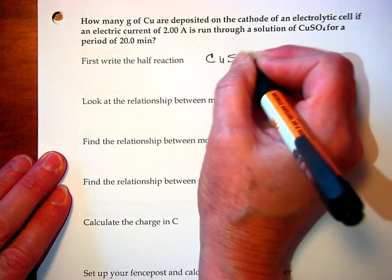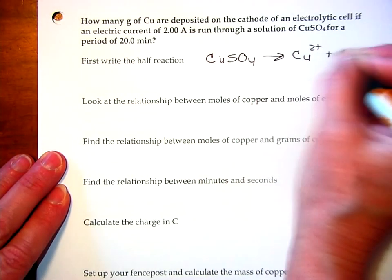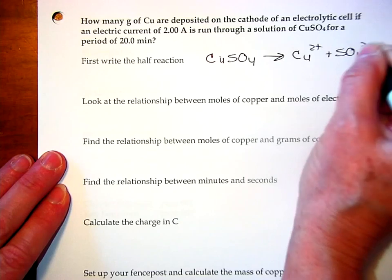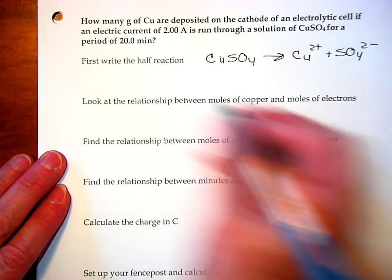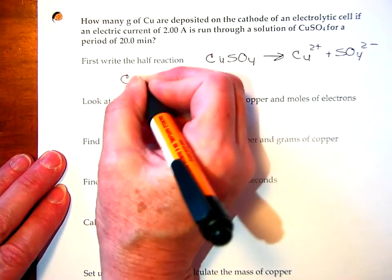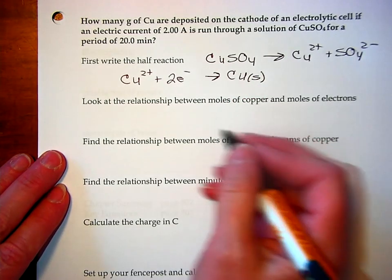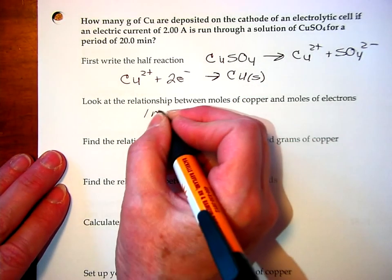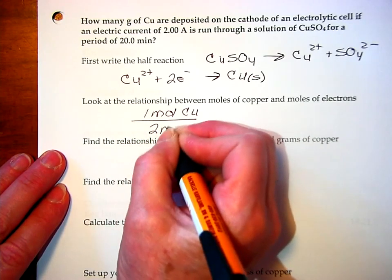Copper 2 sulfate dissolves in water and it gives us copper ions plus sulfate ions. The copper is what's undergoing the electrolysis so we ignore the sulfate. So, we have copper 2 plus gaining 2 electrons to make copper solid. Now, if we look at this half reaction, we can see that 1 mole of copper is produced from 2 moles of electrons.